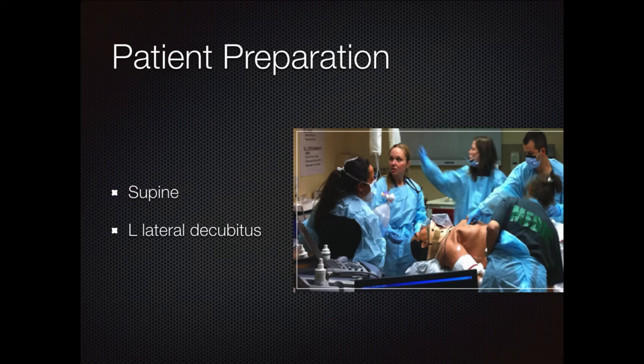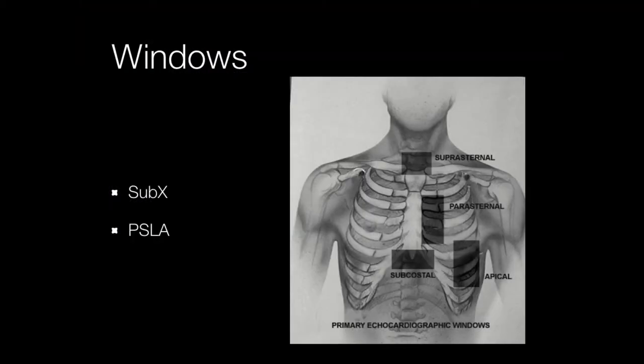From a patient standpoint, some of this is dictated by the mechanics of trauma — they're going to be supine, in spinal precautions. But sometimes if you can't get a good view, you may need to roll them into the left lateral decubitus position, especially in the medical patient. Getting them onto their left side pulls the heart more towards the chest wall and gives you a better window. In the trauma bay you often won't have that luxury.